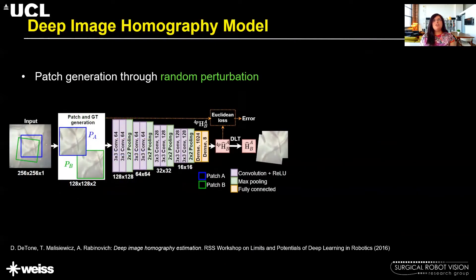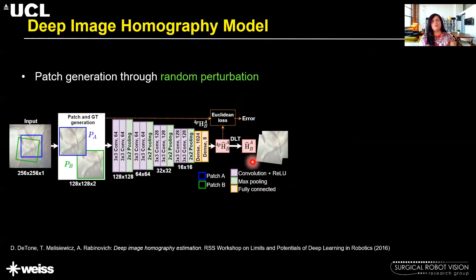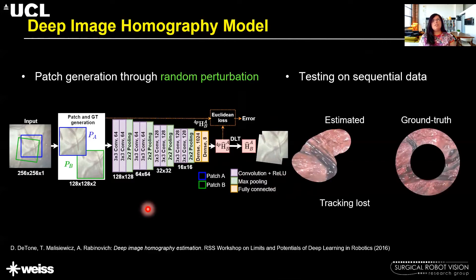In the deep image homography approach, a still image is taken and two patches are extracted, where the second patch is extracted by randomly perturbing the four corners of the first patch. As a result, the ground truth transformation between these two patches is known, which can be used for training a VGG-style network to estimate the four-point homography, which is then transformed into a 3x3 homography for registration. The problem with this method is that random perturbation introduces error, and even a small error when tested on sequential data results in large drift.